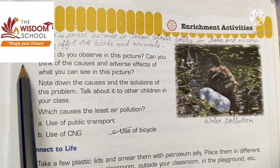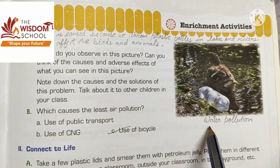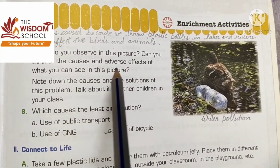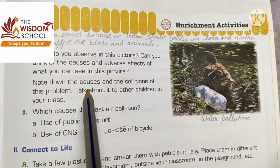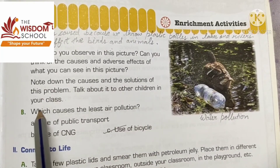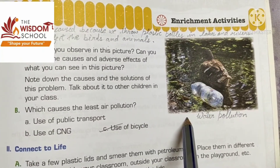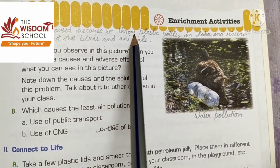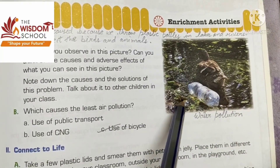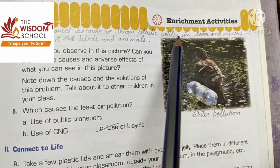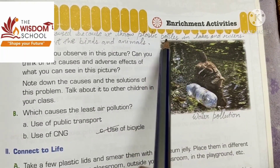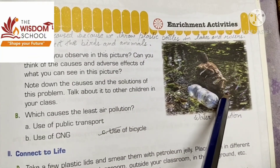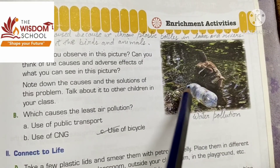HOTS Part A: What do you observe in this picture? Note down the causes and the solution of this problem and talk about it with other children in class. This picture shows water pollution - it is caused by throwing plastic bottles and garbage into lakes and rivers. It can adversely affect birds and animals, and it affects the marine life of animals as well.